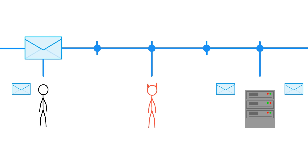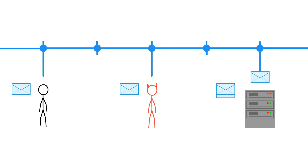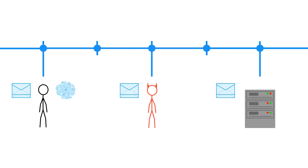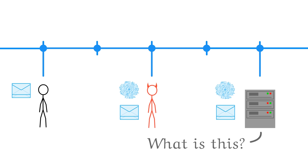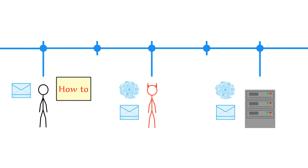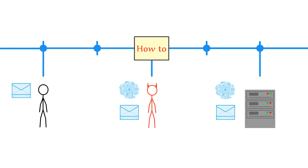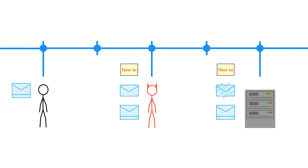No one else should be able to see any of these messages. But what's stopping an eavesdropper from taking your messages and making copies for themselves? Not much. So what if you scramble your messages — write them in a secret code? Then how are you and the server supposed to unscramble each other's messages? If you tell each other how to unscramble them, the eavesdropper knows how to unscramble them too, and all of this is pointless.